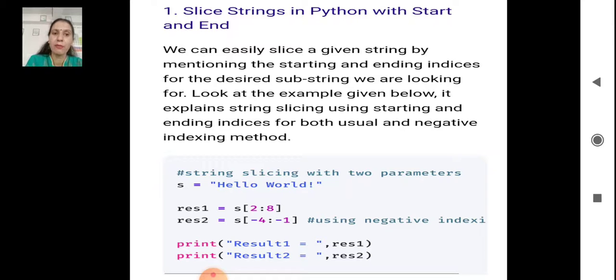So we start slicing from L, L, O. The index of H is 0, E is 1, L is 2, L is 3, O is at 4, space at 5, W is at index 6, O is at index 7, and R is at index 8.